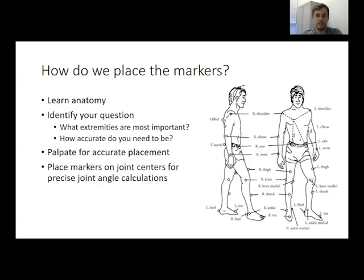This allows us to make very precise calculations about how different joints are moving. For example, if we want to track how the ankle joint moves over time and calculate the angles it passes through, we need markers placed carefully so they only move with the bones of the foot and shank — not with the calf muscle or tissue on top of the foot. We need very precise marking of that ankle joint center to get accurate joint angle calculations.